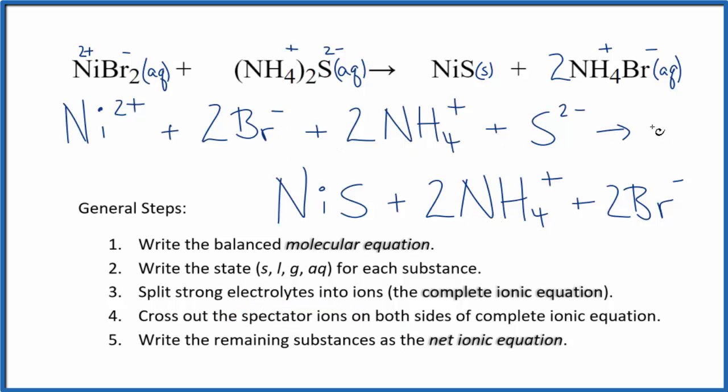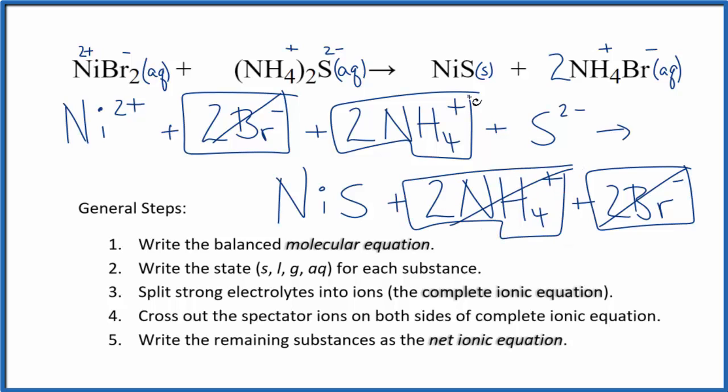Let's see. In the reactants, two bromide ions. In the products, two bromide ions. These are spectator ions. We can cross those out. Reactants, two ammonium ions. And in the products, spectator ions. Cross them out.